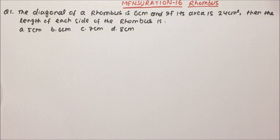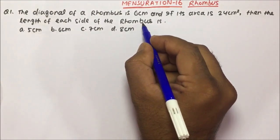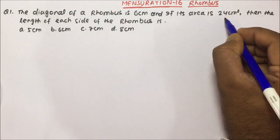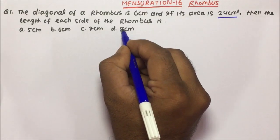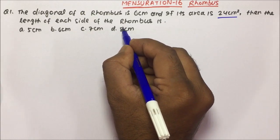In mensuration, we are going to study a very important topic which is nothing but rhombus. Please watch the previous video, mensuration part 15, so that you will be able to understand the concept of rhombus. Now friends, the question is: the diagonal of a rhombus is 6 cm and if its area is 24 cm², then find the length of each side of the rhombus. This is a very easy problem.